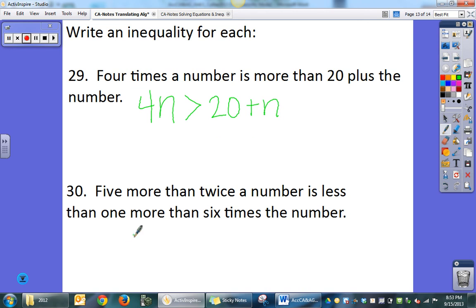5 more than twice a number is less than 1 more than 6 times the number. So let's take it a piece at a time. 5 more than twice a number. So 5 more than twice a number is less than 1 more than 6 times the number.